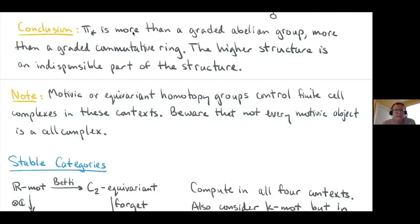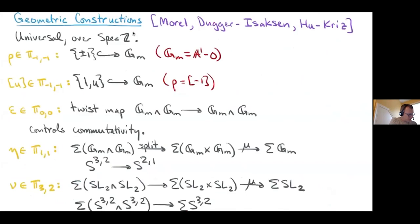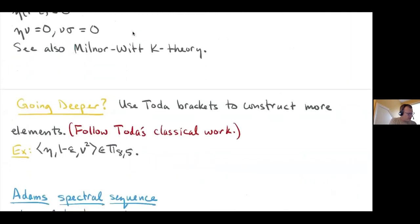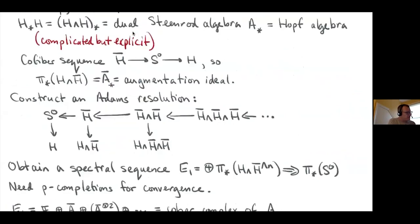Let me talk about what we covered last time on Tuesday. I talked about the stable homotopy groups and why they're important. The main idea I emphasized was that stable homotopy groups are more than groups, more than a ring — they have a higher structure that's indispensable. We talked about motivic homotopy, some constructions of motivic homotopy elements, and then we dove into the setup of the Adams spectral sequence.